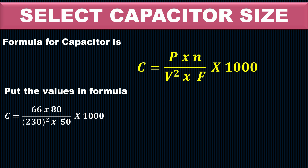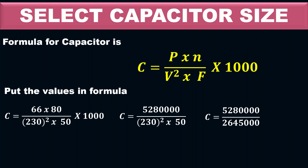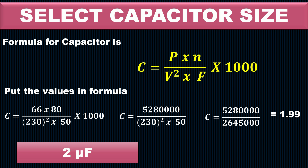That gives us five million two hundred eighty thousand divided by two million six hundred forty-five thousand, so the answer becomes 1.99, or approximately 2 microfarads. So for a 66-watt motor, we select a 2 microfarad capacitor. Microfarad is the unit of capacitance.